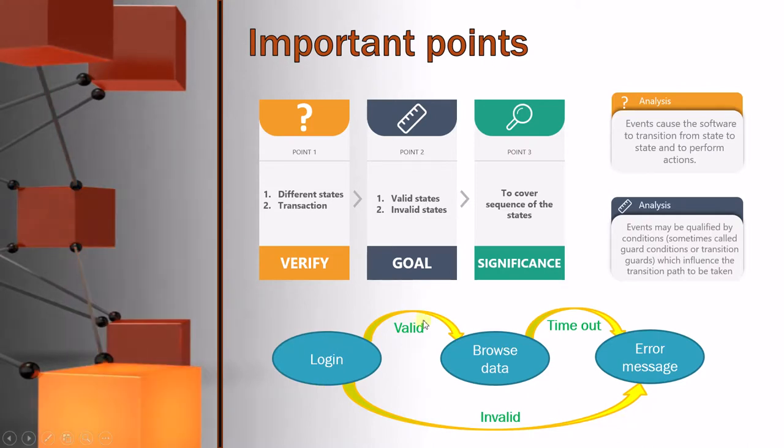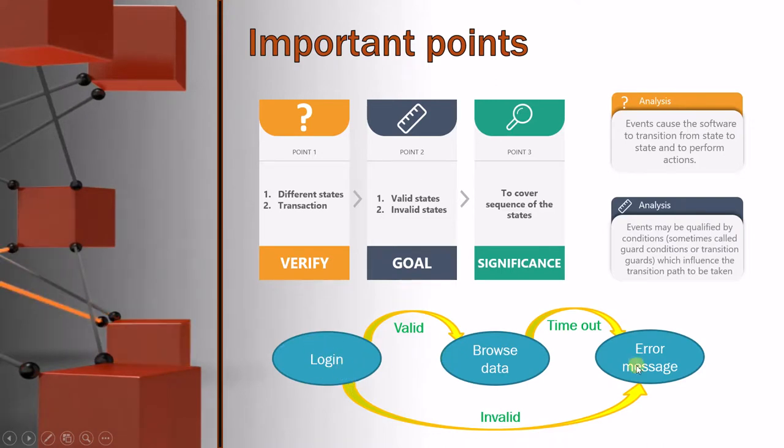As we were in login data, if it is valid, it will take this path, the top path. And if the login details are wrong, then it will take the other path. So that is the condition they are talking about here.